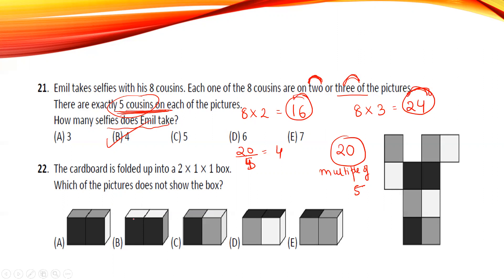A cardboard is folded into a 2×1×1 box. Whichever figure does not form the box: if you move the figure around, you can see certain squares will always be white. White, white, white, white — straightforward. B will be the answer that does not fold into the box.